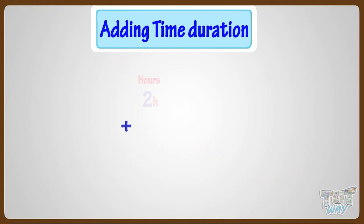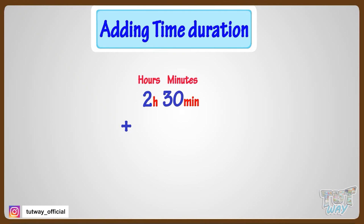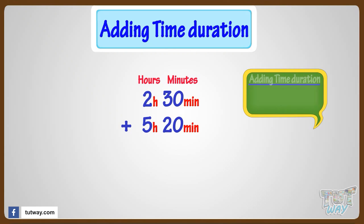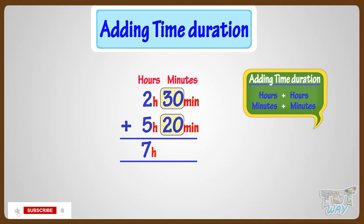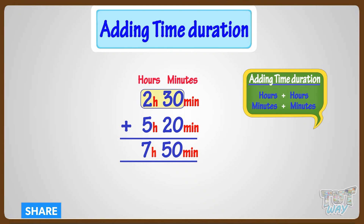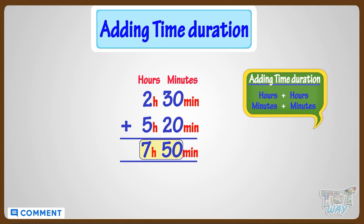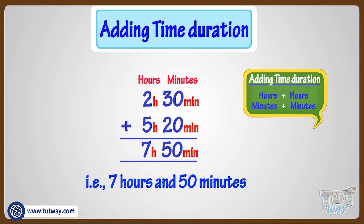We have to add 2 hours and 30 minutes to 5 hours and 20 minutes. While adding time, the simple rule is to add hours with hours and minutes with minutes. By adding hours, we get 7 hours. And by adding minutes, we get 50 minutes. So adding 2 hours 30 minutes to 5 hours 20 minutes, we get 7 hours and 50 minutes.